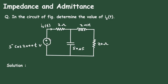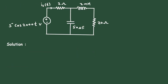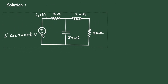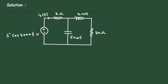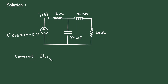First of all, we will copy the given circuit. Here we can see the values are given in time domain format, so we will convert this into its equivalent phasor domain.